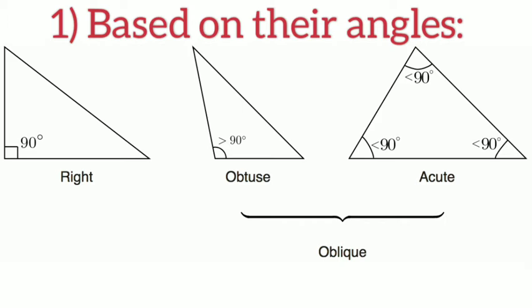If any one of the angles is 90 degrees, then it's called a right angle triangle. If any one of the angles is greater than 90 degrees, then it's called an obtuse angle triangle. Third type is acute angle triangle. If all of the angles are less than 90 degrees, then it's called an acute angle triangle.